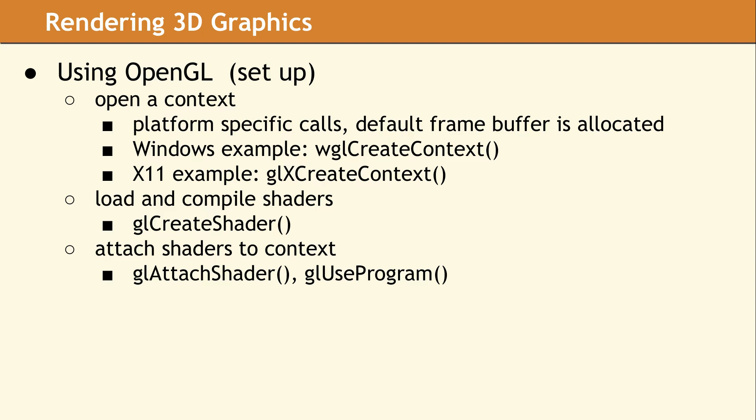In order to call any OpenGL API function, you must first allocate a context using platform-specific functions. For Windows, this is a call to wgl-create-context, and for X11, this is a call to glx-create-context. The next step is to load and compile the set of shaders your application will be using. Then you call two other OpenGL functions to attach the shaders to the context you created in step one. The purpose of these OpenGL calls is to configure the graphics driver. At this point, no rendering commands have been sent to the GPU.